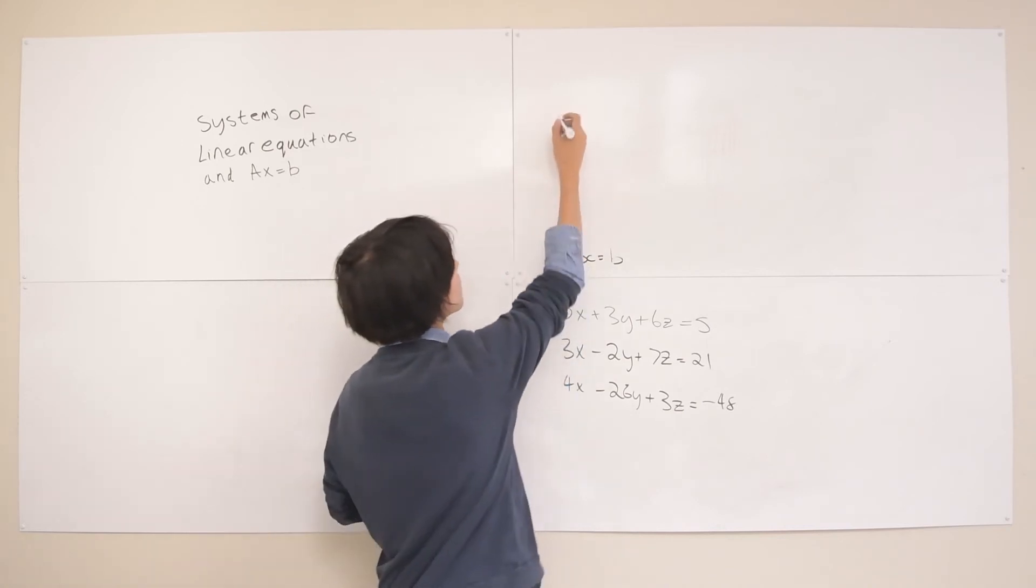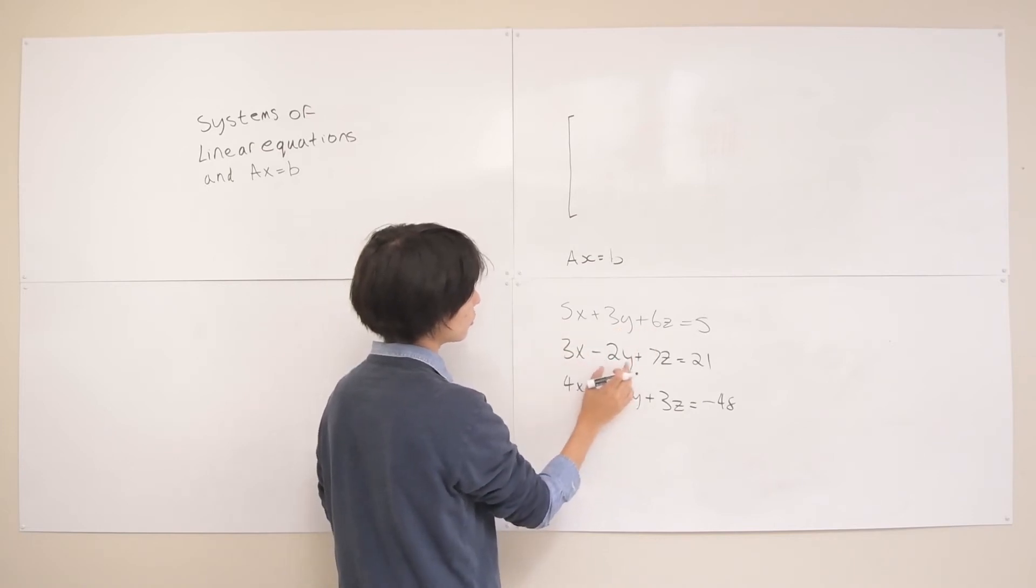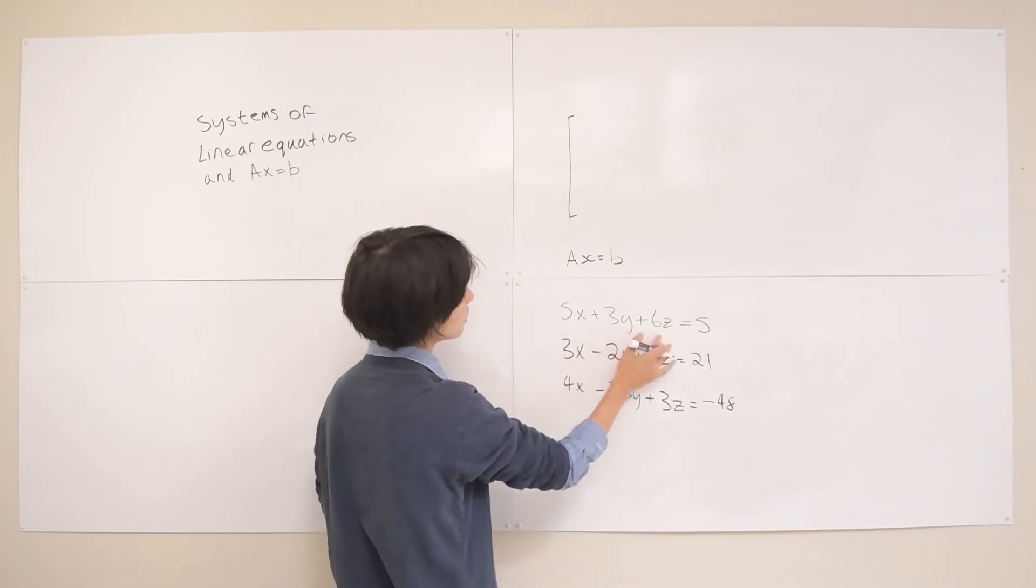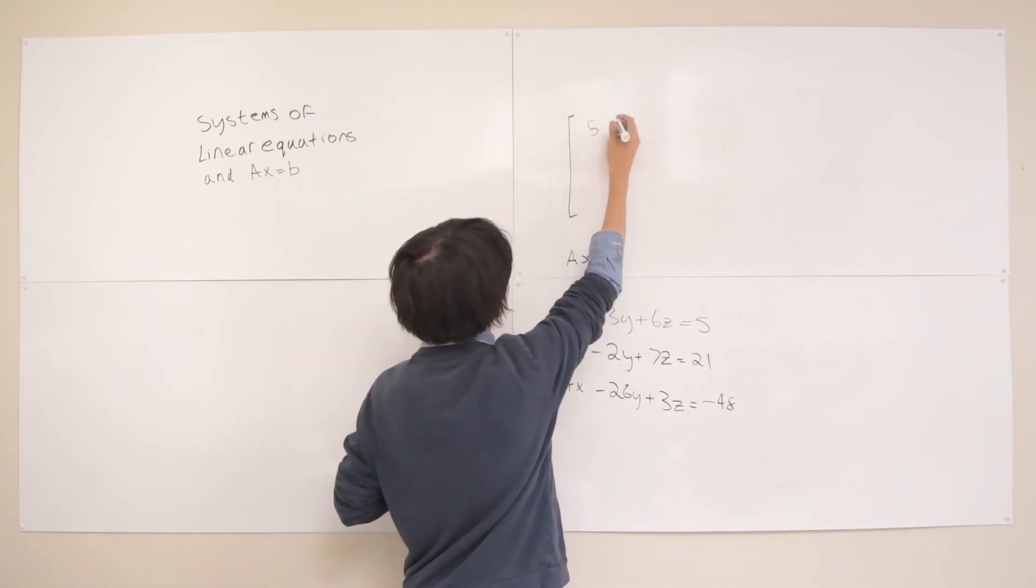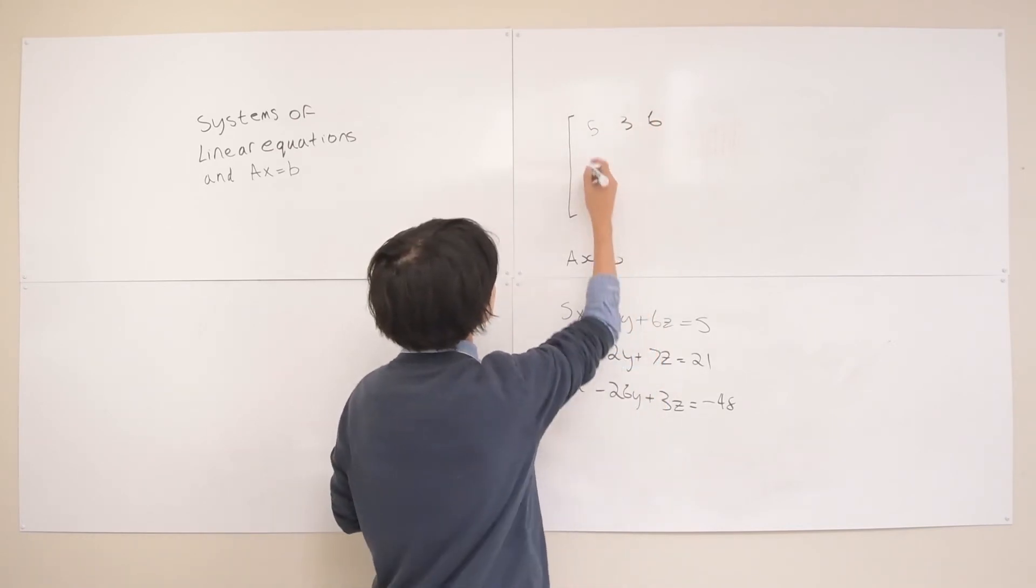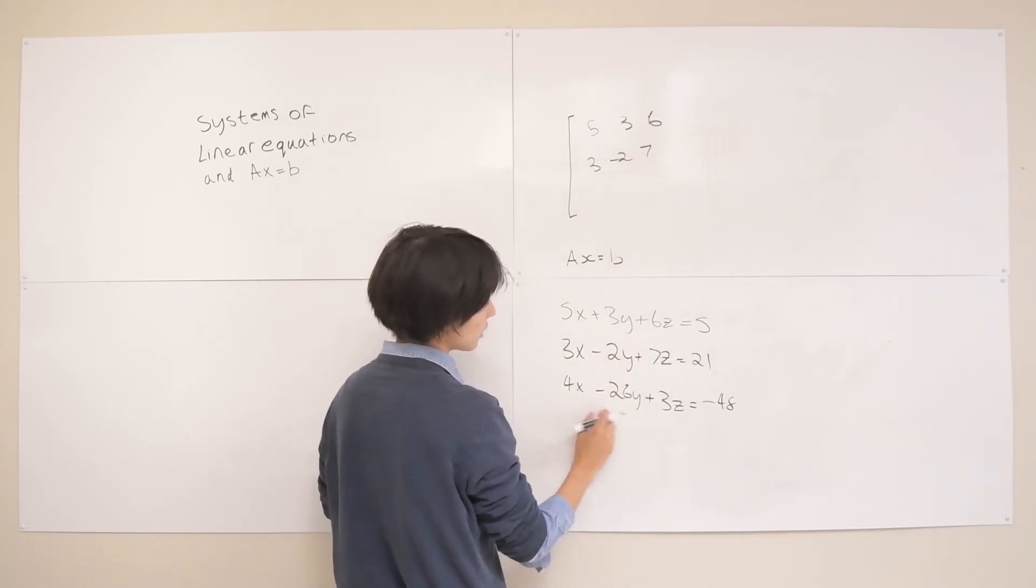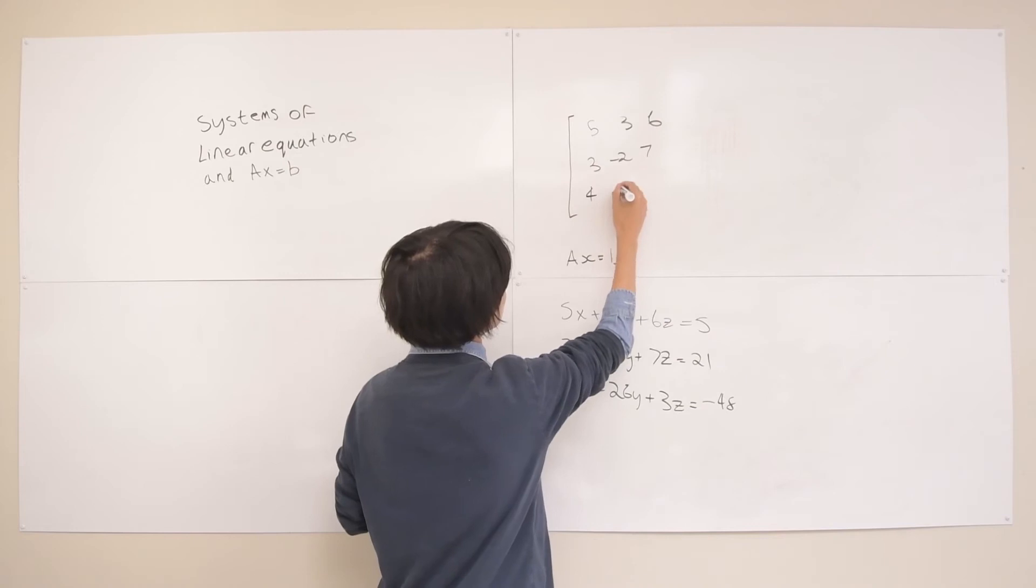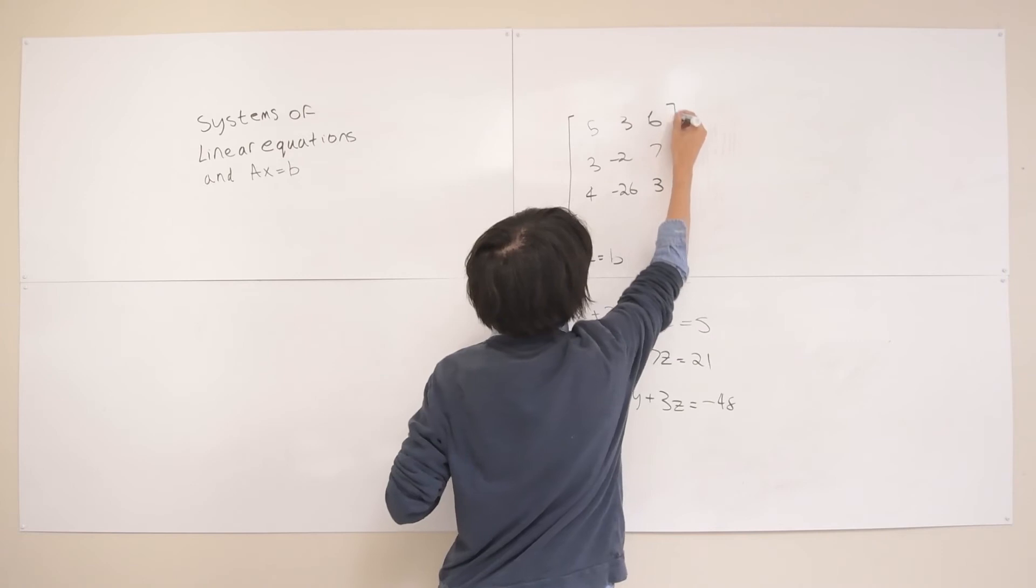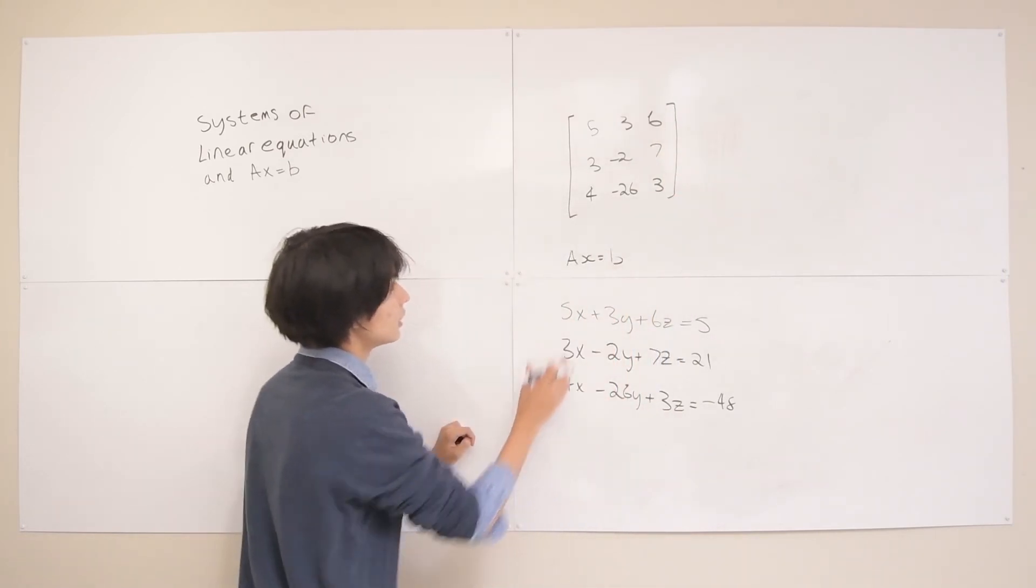We're looking for something that's ax equals b so let's make that a first. We're just going to take the coefficients of each of the variables and put them in the corresponding rows of the matrix. So the first three here, five three and six, is going to be the first row of our matrix. Then the second one, three negative two and seven, is our second row. And then our last row is going to be four negative 26 and three. So we have a three by three matrix which encodes all our coefficients.